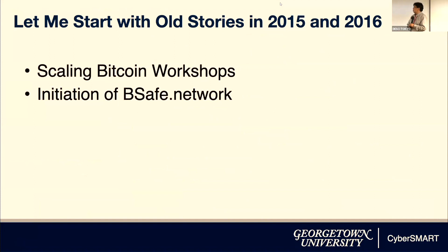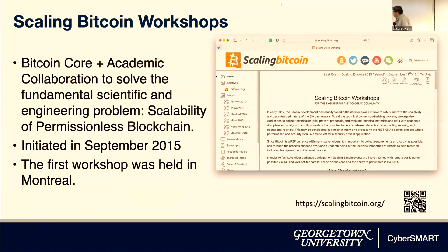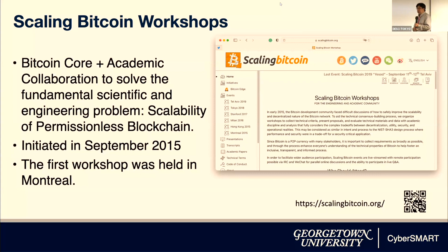I would like to start with my two past experiences in 2015 and 2016, about seven or eight years ago. One is the Scaling Bitcoin Workshop, and the other is the initiation of the BSF.network. The Scaling Bitcoin workshop initiated in September 2015 in Montreal, Canada — an interesting collaboration between Bitcoin core engineers and academic communities to discuss potential solutions to the fundamental scientific problem of scaling the permissionless blockchain. As you may know, a truly permissionless blockchain is not scalable — Bitcoin can process just seven transactions per second globally.